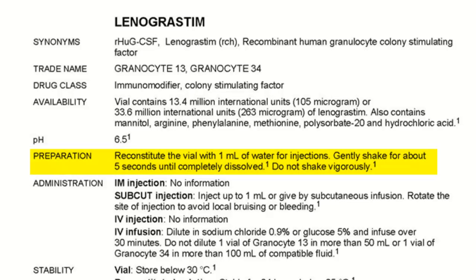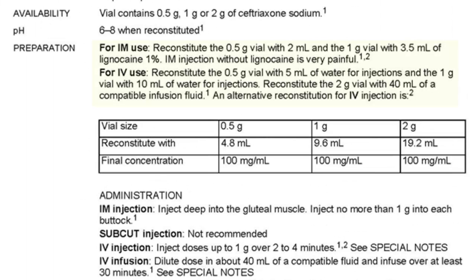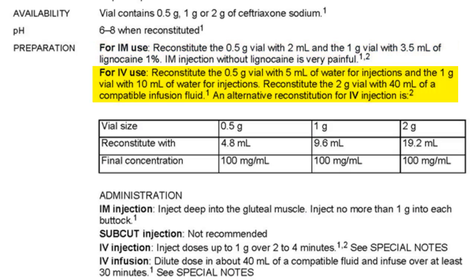For lenograstim, reconstitute the vial with 1 ml of water for injections — inject 1 ml into the vial and shake gently for 5 seconds until dissolved. Always check for particles or unusual colour after dissolving; if present, discard the vial. This medicine has two different instructions: for IM use, reconstitute with lignocaine because the injection is very painful; for IV use, reconstitute with water for injections.